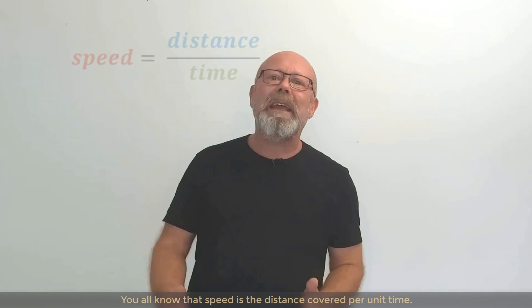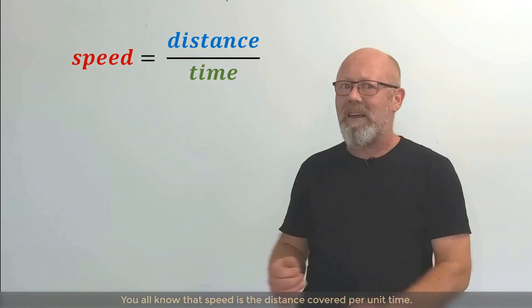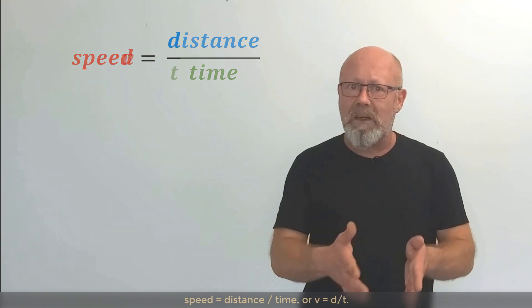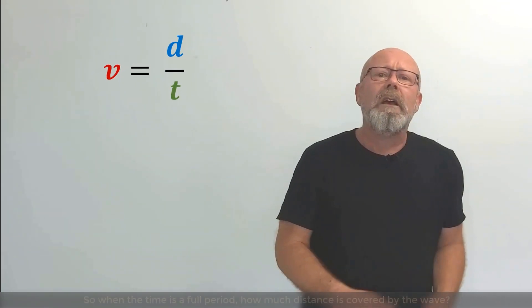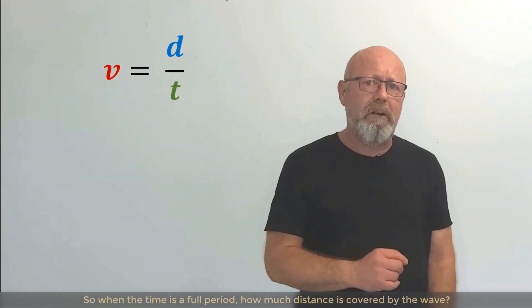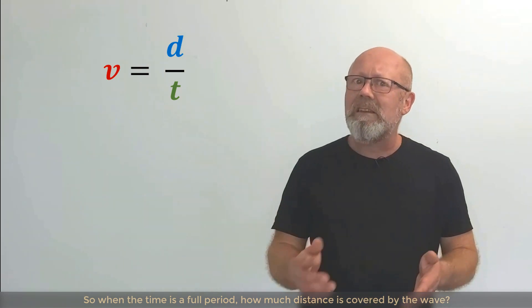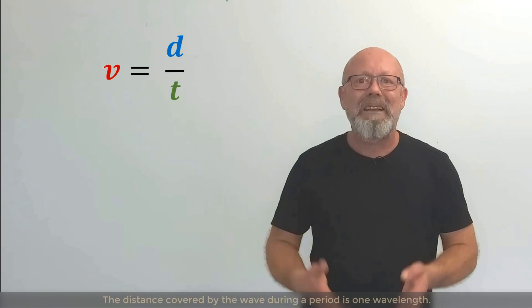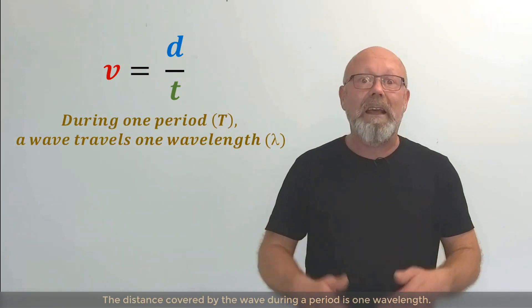You all know that speed is the distance covered per unit time. Speed is distance over time. V equals little d over little t. So when the time is a full period, how much distance is covered by the wave? Well, we just saw that. The distance covered by the wave during a period is one wavelength.